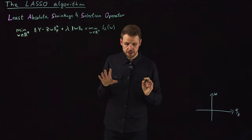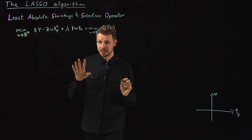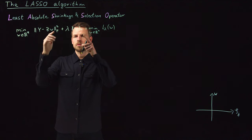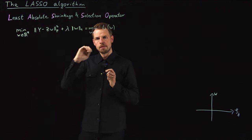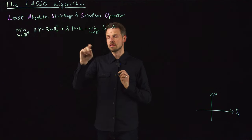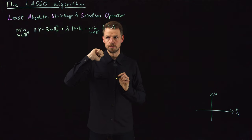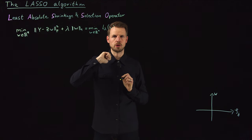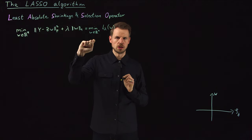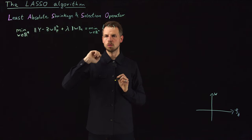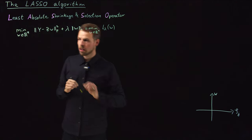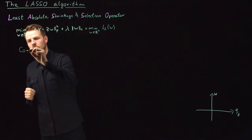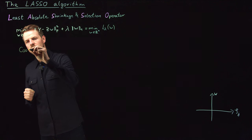So what is the idea? The idea is actually solving this problem coordinate by coordinate. Because if we do this, then for a single weight this can be solved in closed form. For multiple weights it cannot; for a single weight it can. And so the algorithm we are going to use is coordinate descent.